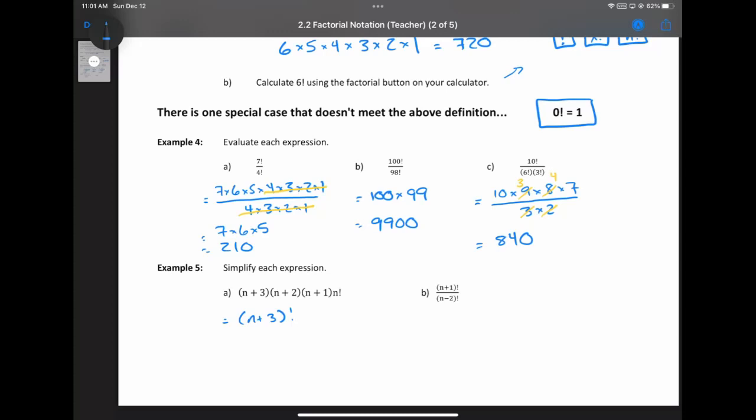I'm going to say that the answer to this one is just n plus 3 factorial. The reason for that is that n plus 3 factorial is n plus 3 times the number 1 below it, which is n plus 2, times the number 1 below that, which is n plus 1, times the number 1 below that, which is n. And then I could keep going, but everything below that is covered in the n factorial. So that's actually kind of a useful property. We can take streams of numbers and instead of expanding out a factorial, I can condense them into 1 factorial.